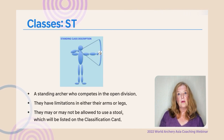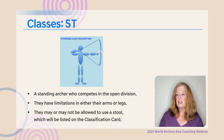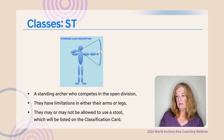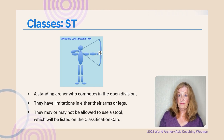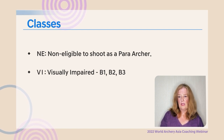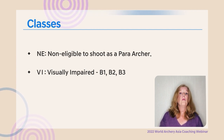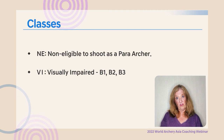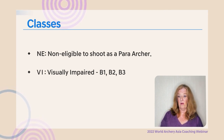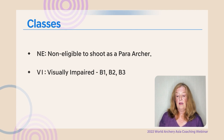The standing archer competes in the open division with the W2s. They can shoot a recurve or compound bow, have limitations in either an arm or a leg, and may be allowed a stool which will be listed on the classification card. There is also a non-eligible class — this doesn't mean they don't have a disability, just that they don't have enough points or loss to compete as a para archer. Then we have the visually impaired categories: B1, B2, and B3, from the International Blind Sporting Association.